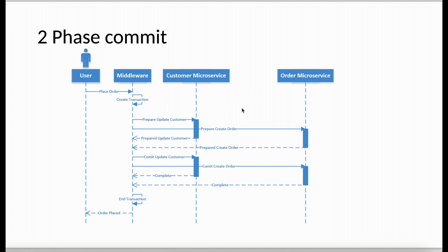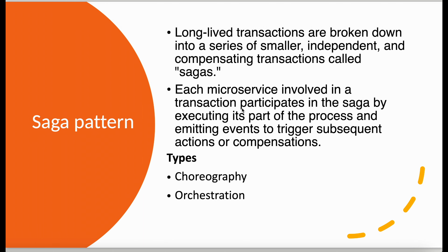To overcome these challenges, we can use the saga pattern. The saga pattern is used for long-lived transactions where transactions are broken down into a series of small, independent, and compensating transactions called sagas. 'Compensating' means that if we have made changes and need to roll back, that is the compensating transaction. Each microservice involved in a transaction participates in the saga by executing its part of the process and emitting events to trigger subsequent actions or compensation.